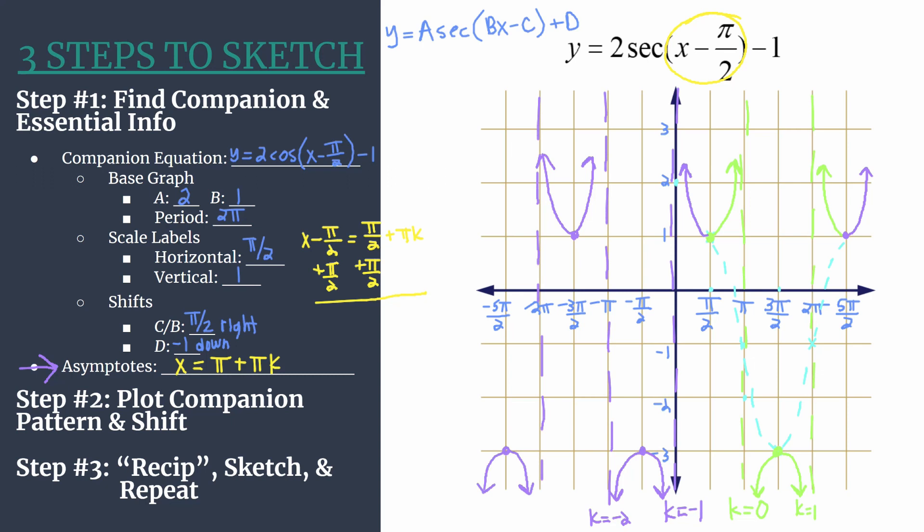Here we have three cycles of our graph, y equals 2 secant x minus pi over 2 minus 1. We've already done a double check with our asymptotes equation. If you want to look back at b, we said that b is 1, we should have one cycle of the graph happening between 0 and 2 pi. We have one cycle of our graph, and so we should feel really confident that this is a great sketch of our equation. Hopefully this helped you better understand how to graph shifted secant graphs with the three steps to sketch method. I will post links in the video description with more worked examples for secant graphs as well as for all the other trig functions. Thanks for watching.